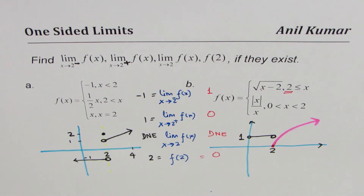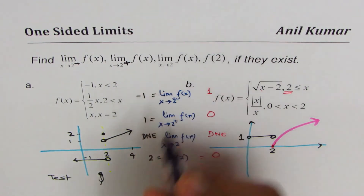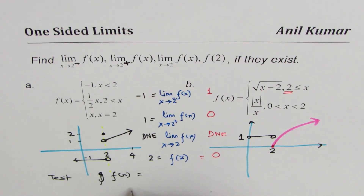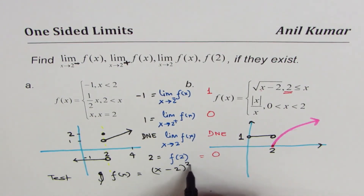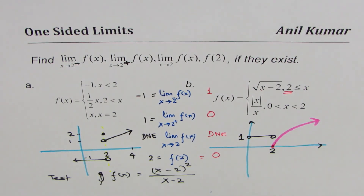Now I would like you to take this as a test problem and answer these questions. We define f(x) = (x - 2)² / (x - 2). Find: the limit as x approaches 2 from the left side, the limit as x approaches 2 from the right side, the value of the function at 2, and the two-sided limit at x = 2.